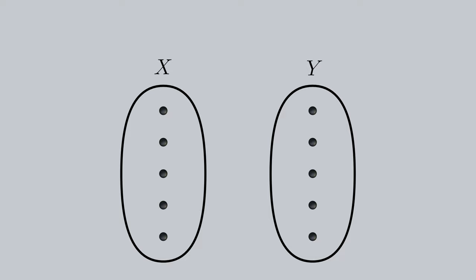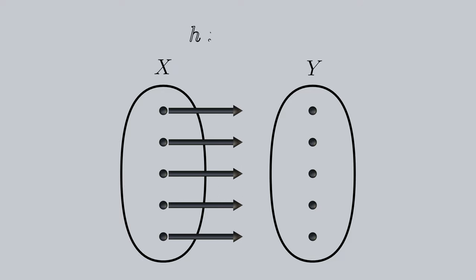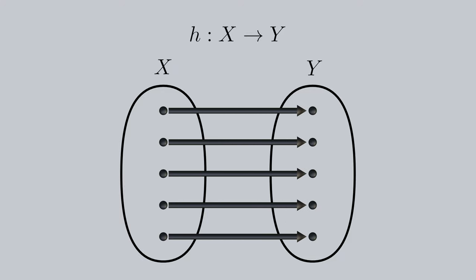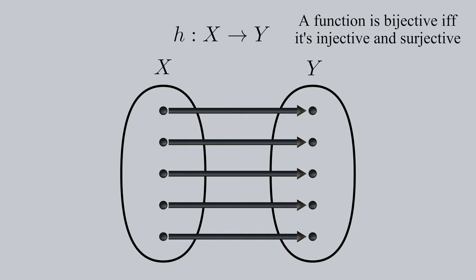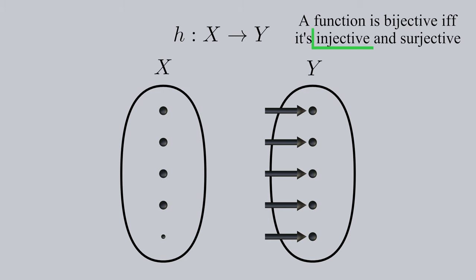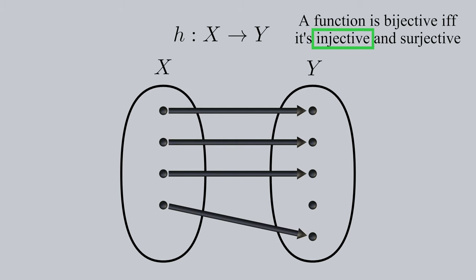We should start off with bijectivity. Suppose we have two spaces, x and y — these don't have to be topological spaces. You can think of them as just pure spaces equal to sets of points, or arbitrary collections of elements. Consider an arbitrary function h from x to y with a one-to-one correspondence between the elements of the spaces. A function is bijective if and only if it's both injective and surjective. An injective function maps distinct elements to distinct elements.